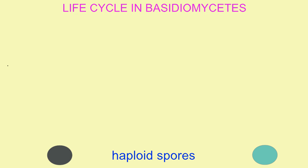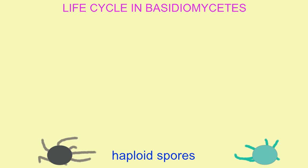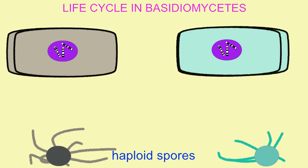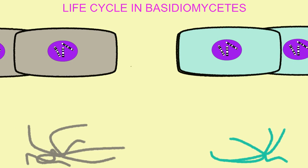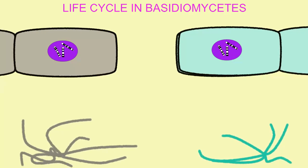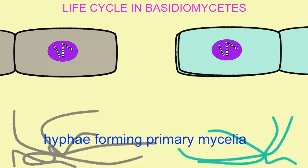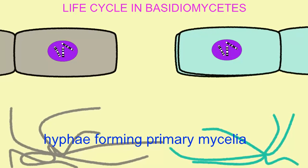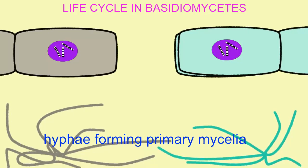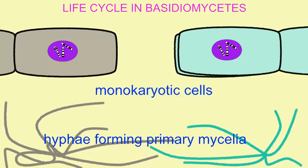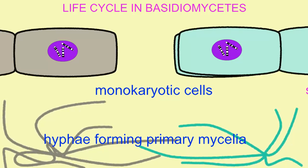There are a number of diverse life cycles which can be present in fungi. That depicted here is typical of the basidiomycetes. The life cycle would begin when haploid spores of different mating types germinate to produce haploid cells in long strands known as hyphae. These hyphae compose a mass of cells known as a primary mycelium, in which the cells are monokaryotic — each cell possesses one single nucleus.